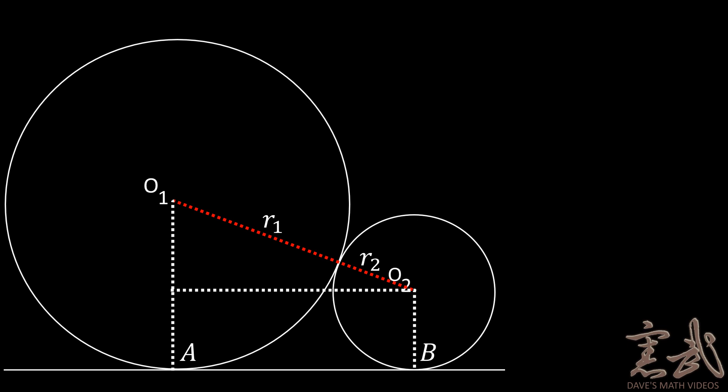We will also label the radius. So circle O1 has a radius of R1. Circle O2 has a radius of R2. Next, you will draw a horizontal line parallel to segment AB that intersects OA at a right angle. This will enable us to use the Pythagorean theorem.